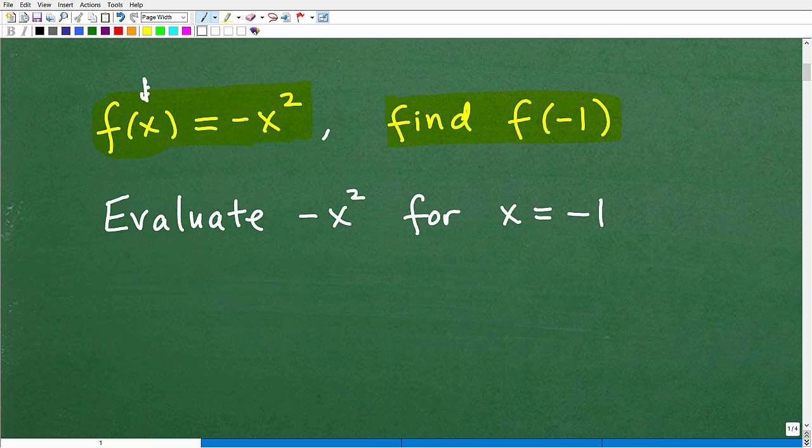Now if you're not familiar with functions, you might see this same question this way. You'll have the word evaluate. Evaluate negative x squared for x equals negative 1. Here and here, the same process is being applied, but you can have just a variation of the question. We're still talking about plugging in negative 1 into this negative x squared and trying to figure out the value. All right.